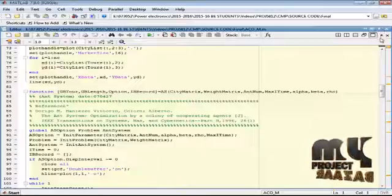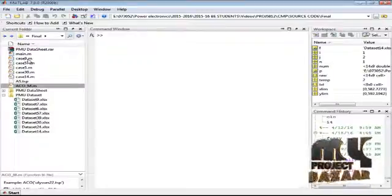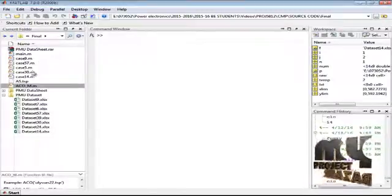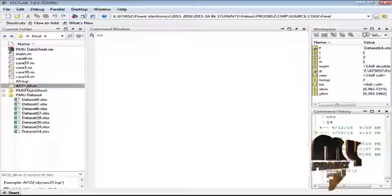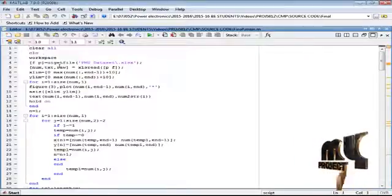And then these are the case files: case for 9 system, 57, 5 and 30, 14. These are the case files, .m files for that.